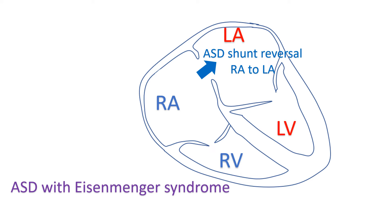By the time it occurs, severe damage would have occurred in the pulmonary arterial tree due to long-standing high pulmonary blood flow. Reactive pulmonary hypertension becomes obliterative because of vascular pathology. The rapidity with which this complication occurs depends on the size of the initial left-to-right shunt. Development of Eisenmenger syndrome may be earlier in certain conditions like trisomy 21. In ASD Eisenmenger, the pulmonary arterial pressures can be suprasystemic.